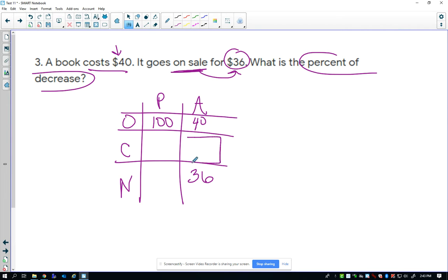I can find this by taking the original minus the new, which is 4. So I have change and I have new. So the question is, what is percent of decrease? Is that change or new?